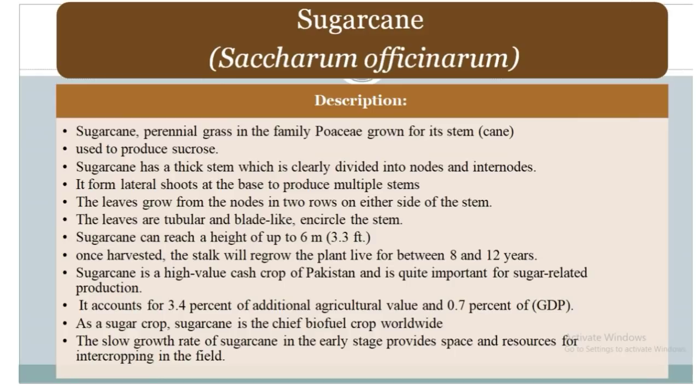Sugarcane is a highly valued cash crop of Pakistan and is quite important for sugar-related production. It accounts for 3.4% of additional agriculture value and 0.7% of GDP. As a sugar crop, sugarcane is the chief biofuel crop worldwide. The slow growth rate of sugarcane in the early stage provides space and resources for intercropping in the field.